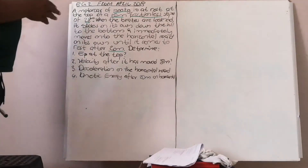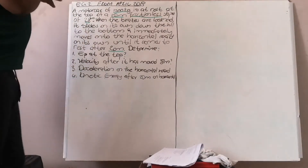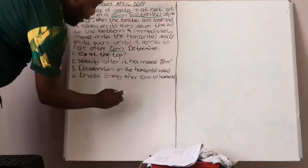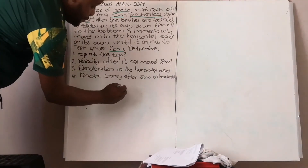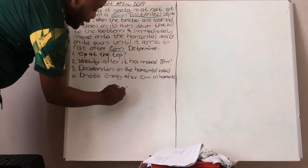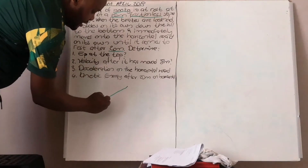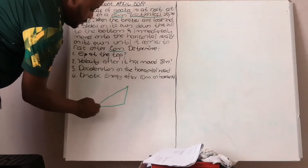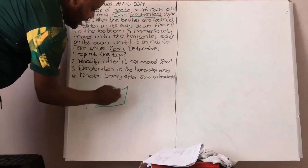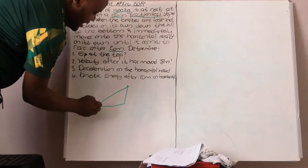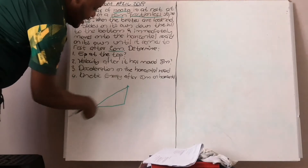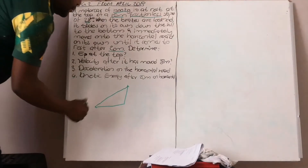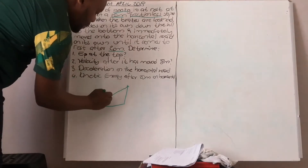The first thing is to draw a space diagram illustrating what is given. Here is the object — the distance s on the incline is 15 meters.